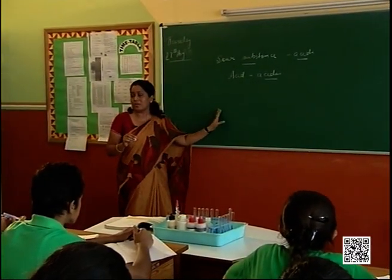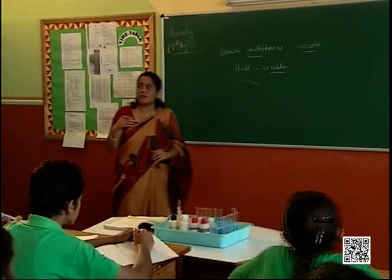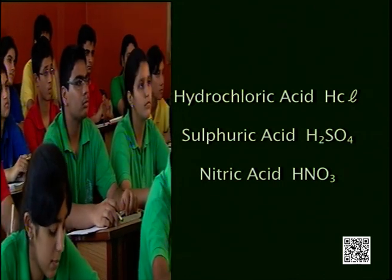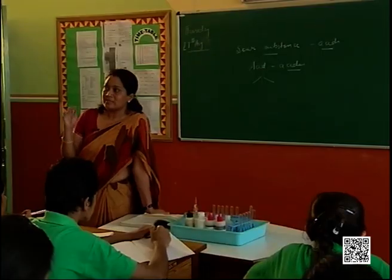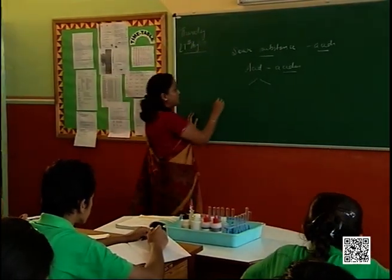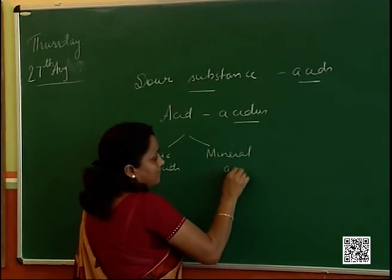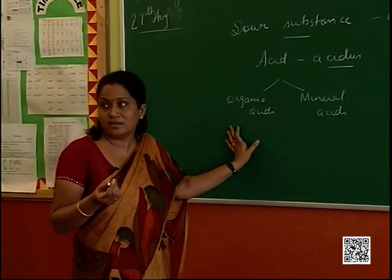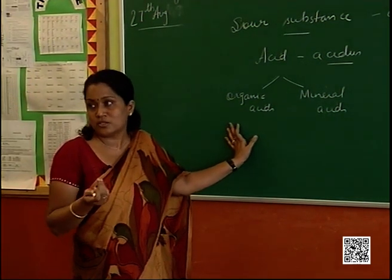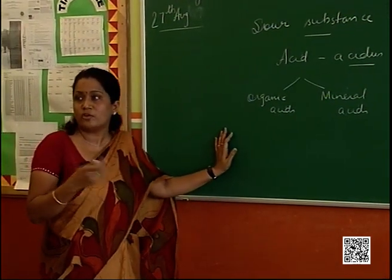All these naturally occurring substances are sour, but you can't really taste all the acids around us. You must have heard about hydrochloric acid, sulfuric acid, nitric acid — they are all so strong that you can't taste them. Acids can be classified into two categories: organic acids and mineral acids. Organic acids are present in organic material derived from natural sources, be it plant or animal, like the citrus fruits we mentioned.